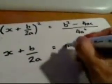And on the right-hand side, the square root will be plus or minus the square root of b squared minus 4ac all over 4a squared.